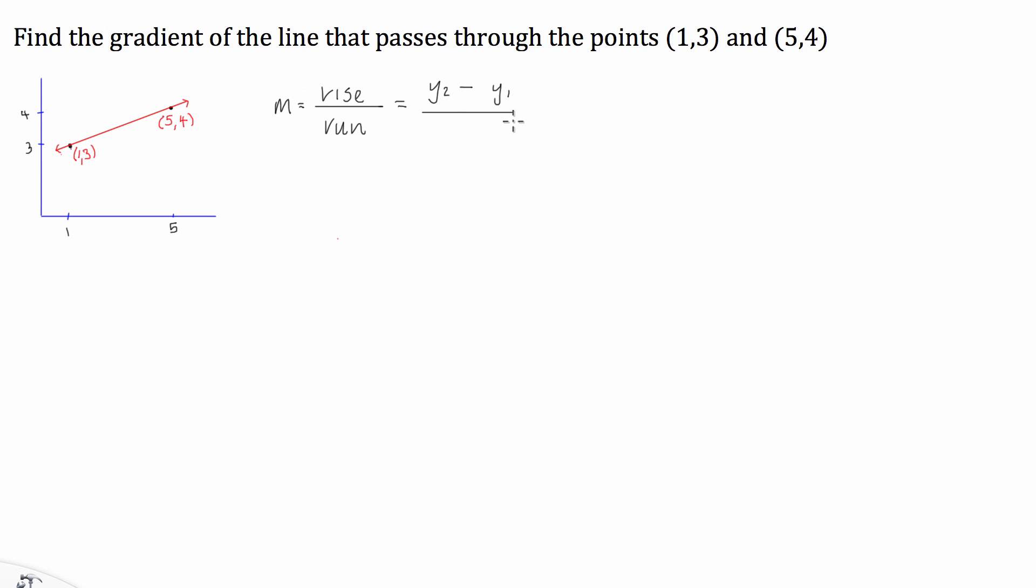We can then divide that by the run, which is, using the same principle, is going to be what the x value finishes at, subtract what the x value started at. So, x2 subtract x1.